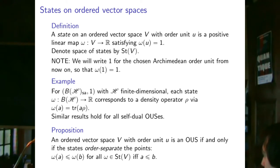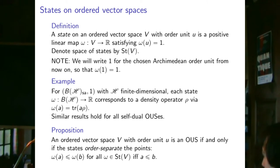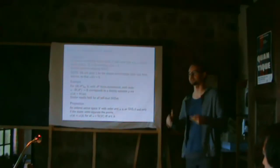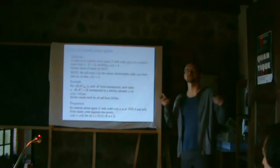There's a characterization of order unit spaces in terms of states: if the order is completely characterized by the point-wise order on states — meaning ω(a) ≤ ω(b) for all states ω implies a ≤ b — then this holds if and only if it's an order unit space. So order unit spaces can be seen as ordered vector spaces with enough states.